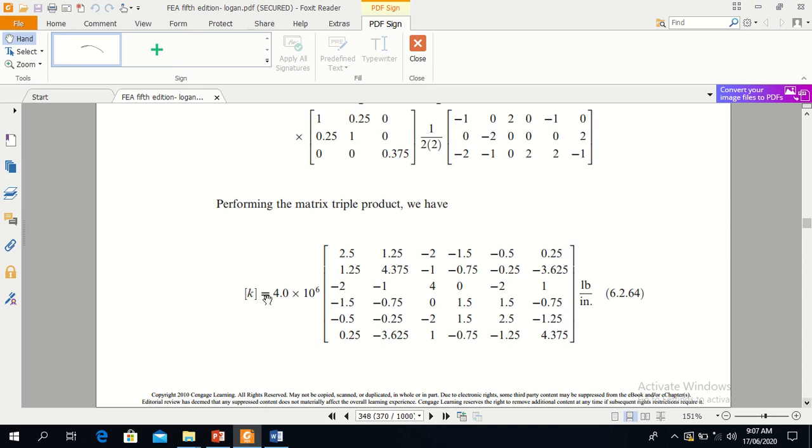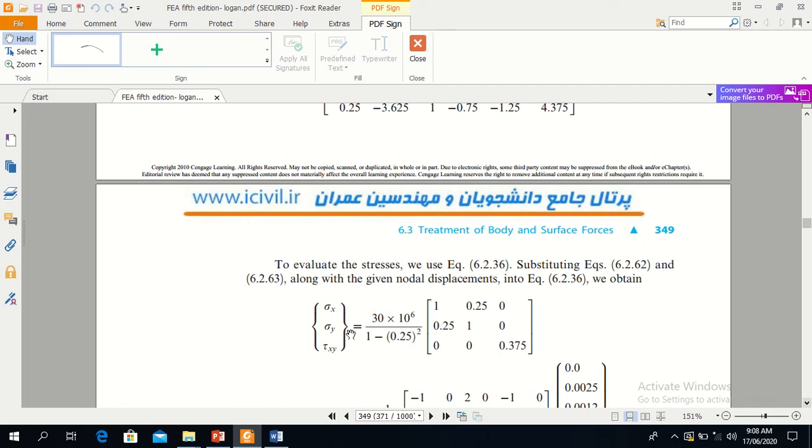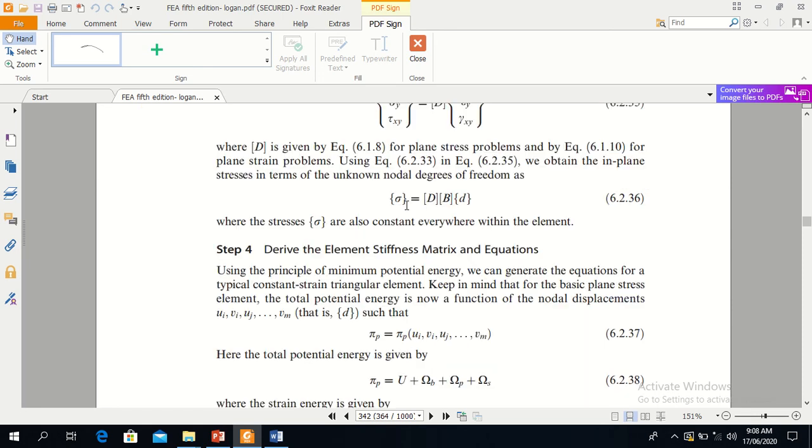And this is the final version of K matrix after multiplying these three matrices. So stress can be calculated by multiplying the strains and displacements and the D. The equation that are used to evaluate stress is equation 6.2.36.